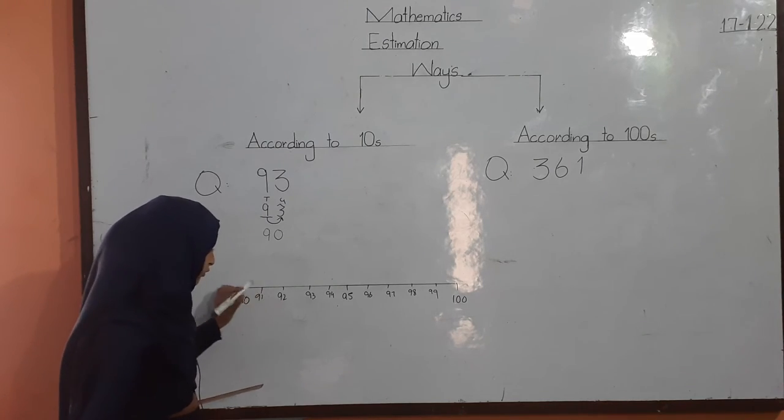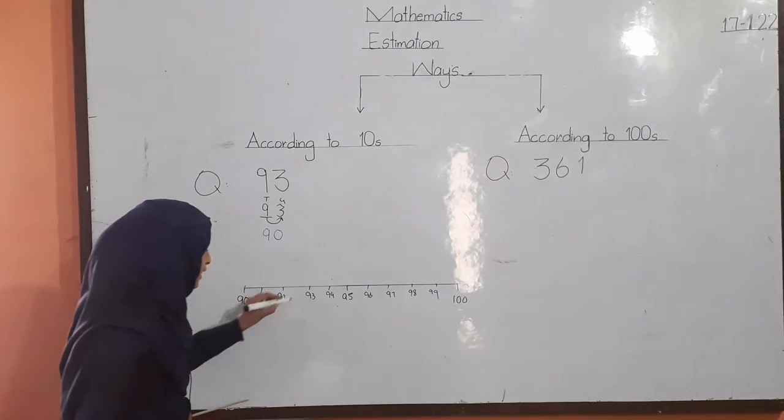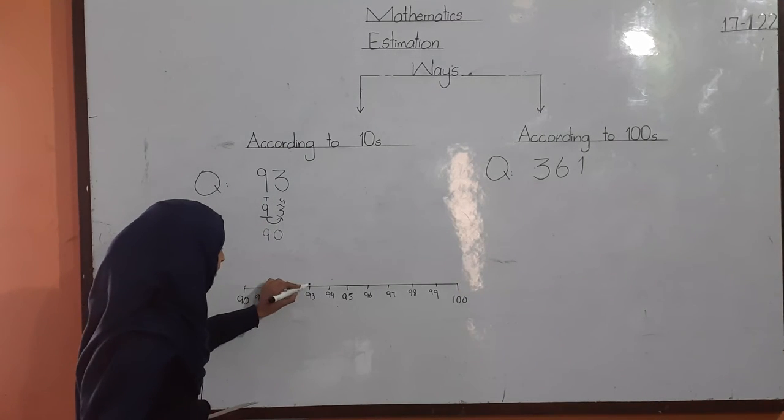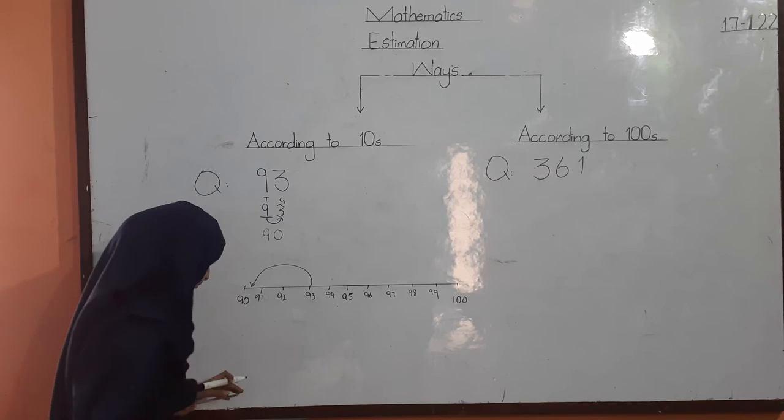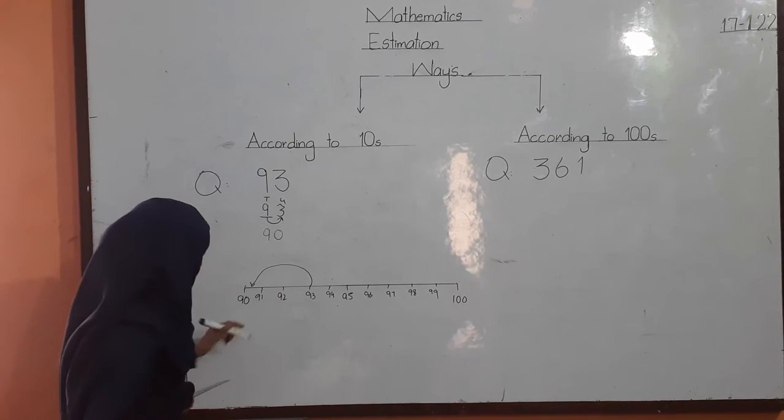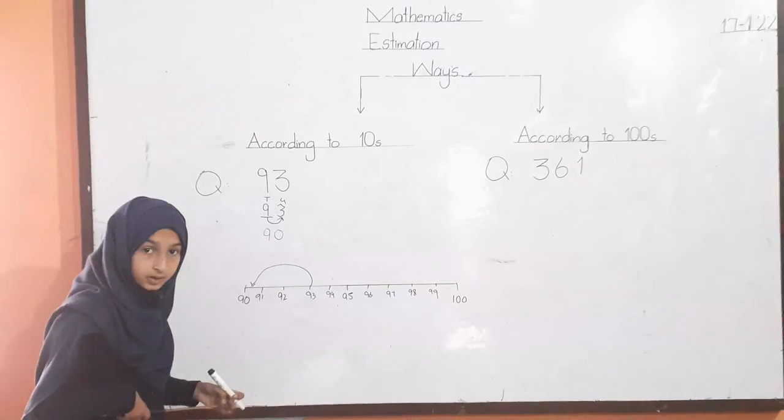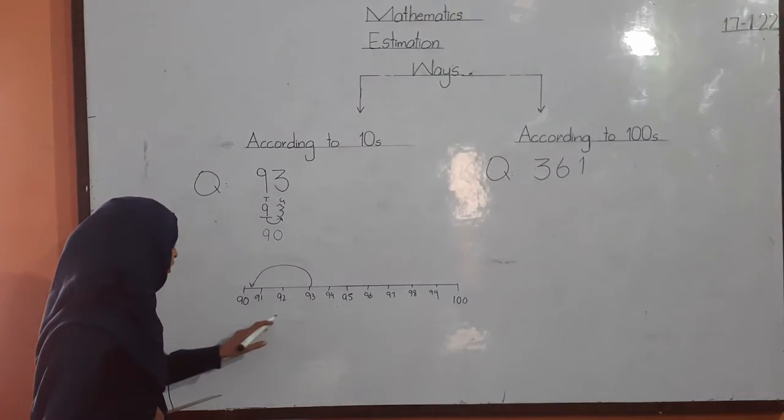For ninety-three, we look at the digit nine. Ninety-three, according to tens value, gives us ninety.